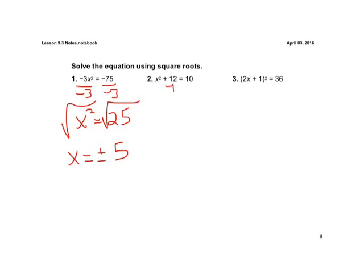Alright, second one here. We're going to subtract 12 on both sides of the opposite operation. We're going to be left with x squared equals negative 2. We see that negative number on the right side. So we instantly know that there are no real solutions.